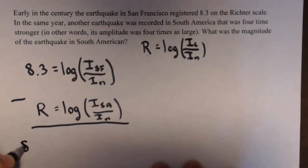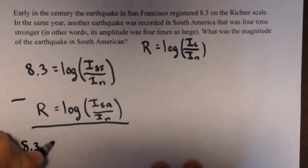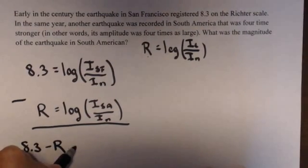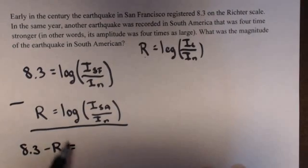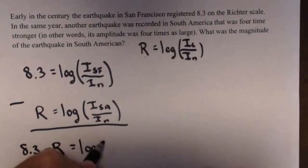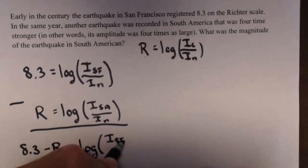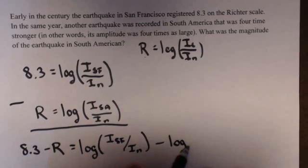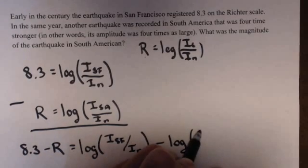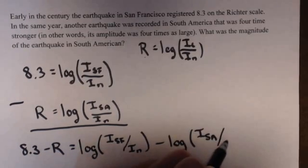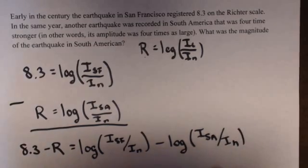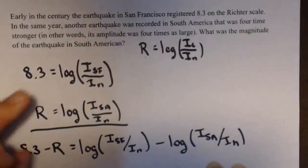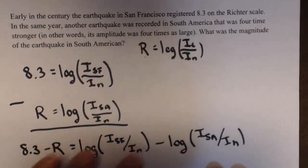So that tells us 8.3 minus R is equal to log of I_SF over I_n minus log of I_SA over I_n. I just subtracted the left-hand side here and the right-hand side here.